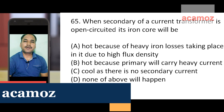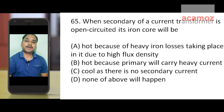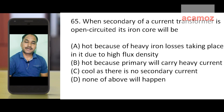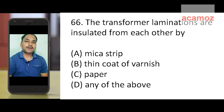Next question: when the secondary of a current transformer is open, the iron core will be — option A: hot because heavy iron loss is taking place due to high flux density, option B: hot because primary will carry heavy current, option C: cool as there is no secondary current, option D: none of the above. The answer is option A: due to increase in flux density, it will get hot.